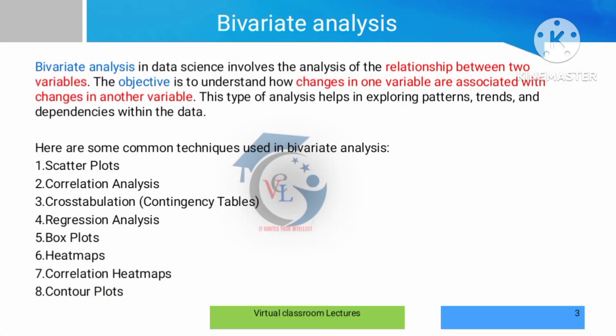In bivariate analysis, we analyze the relationship between two variables. For example, a student's mathematics score and their theory paper score. Another example: a cricket player's previous scores and next score based on the opponent team. If one variable changes, its values change and affect the other variable — that is the cause and effect method.